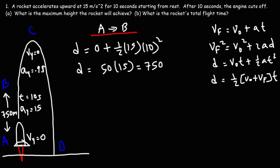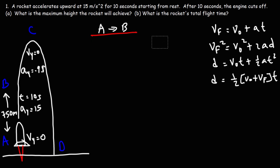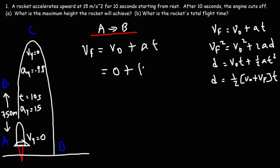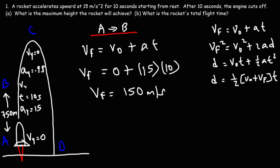To find the displacement from B to C, we first need the vertical velocity at point B. Using V_final = V_initial + AT from A to B: V_initial is 0, acceleration is 15 m/s², and time is 10 seconds. So 15 × 10 = 150 meters per second. That is the vertical velocity at point B.